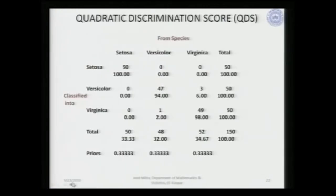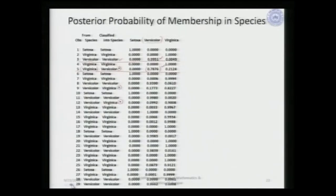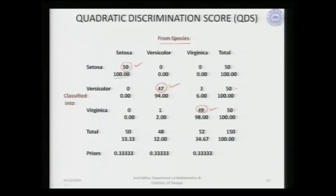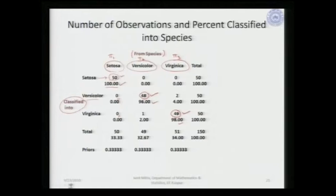Moving on to the quadratic discriminant score — this is a similar table showing the number of observations and percentage classified. We have 50 all correctly classified, 47 correctly classified, and 49 out of 50 correctly classified. Once again we observe a very high percentage of correct classifications — almost the same as what we had for the linear discriminant function.